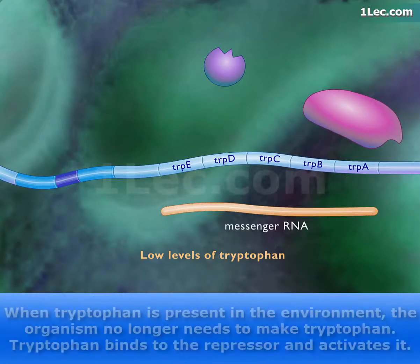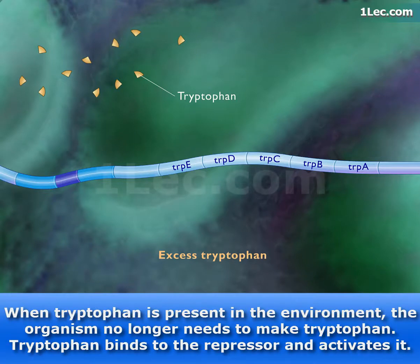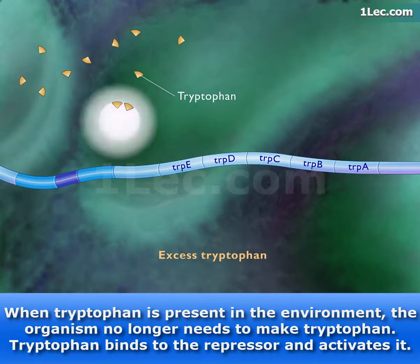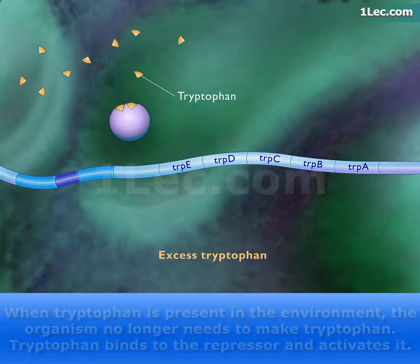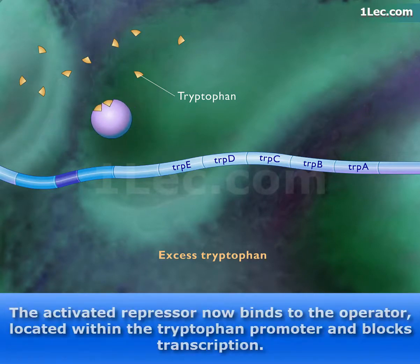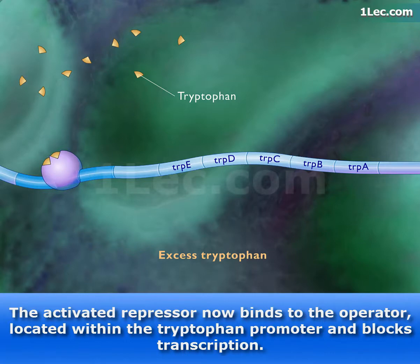When tryptophan is present in the environment, the organism no longer needs to make tryptophan. Tryptophan binds to the repressor and activates it. The activated repressor now binds to the operator located within the tryptophan promoter and blocks transcription.